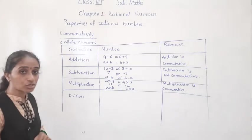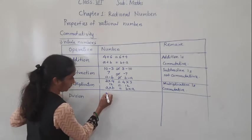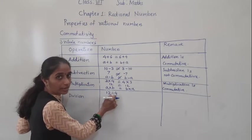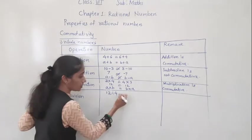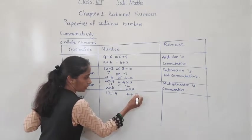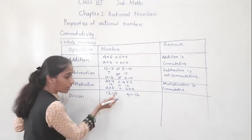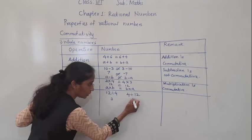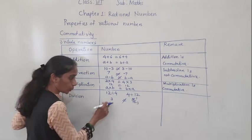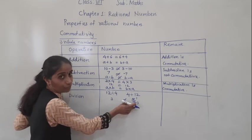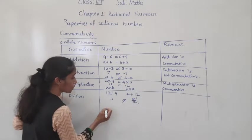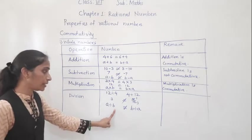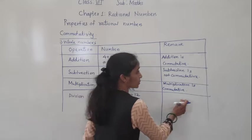Now let's see if the commutative property works for division. Take A divided by B as 12 divided by 4. Then B divided by A is 4 divided by 12. 12 divided by 4 gives 3, which is a whole number. But 4 divided by 12 gives a fraction. These are not equal, so A divided by B is not equal to B divided by A. Division is not commutative.